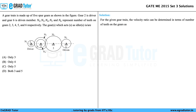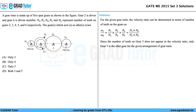Let's see the solution for the given gear train. The velocity ratio can be determined in terms of number of teeth on the gears as: omega2 by omega6 equals n3/n2 into n5/n4 into n6/n5, which gives us n3·n6 divided by n2·n4.